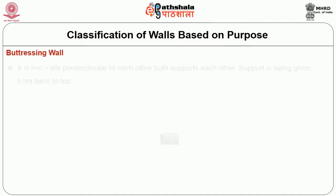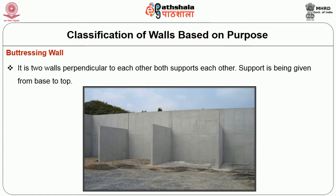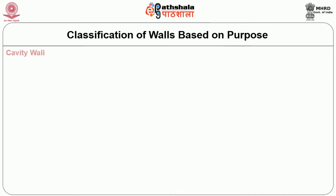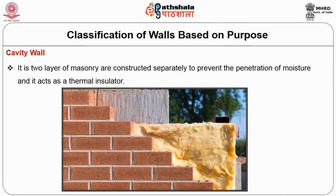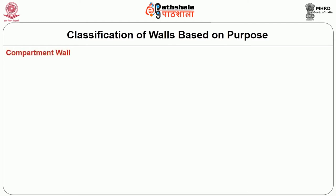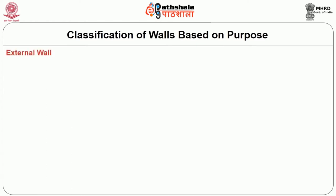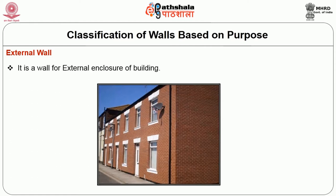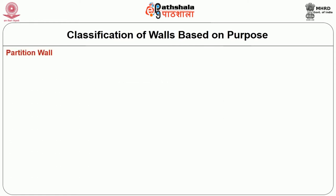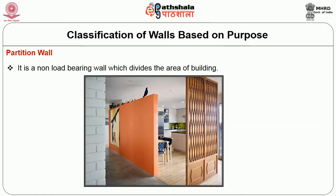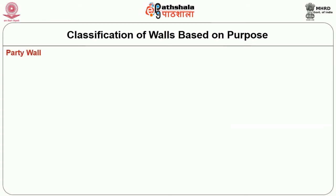Classification of walls based on purpose: Buttressing wall — two walls perpendicular to each other, both supporting each other from base to top. Cavity wall — two layers of masonry constructed separately to prevent moisture penetration, acting as thermal insulator. Compartment wall — constructed as a compartment to protect against the spread of smoke, heat and toxic gases. External wall — the wall for the external enclosure of a building. Partition wall — a non-load-bearing wall which divides the area of the building.